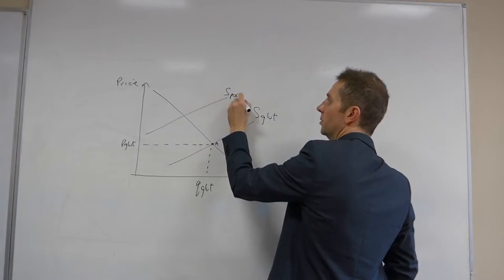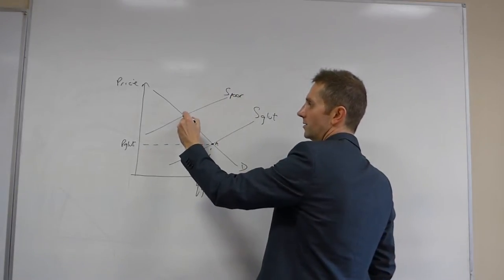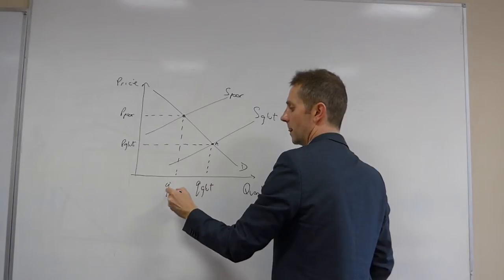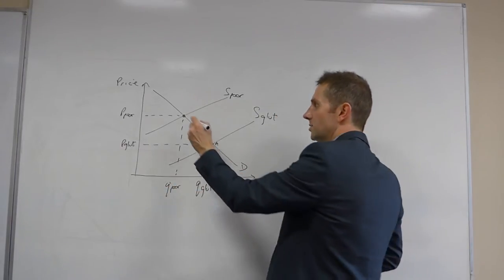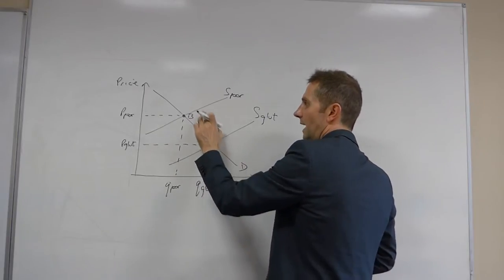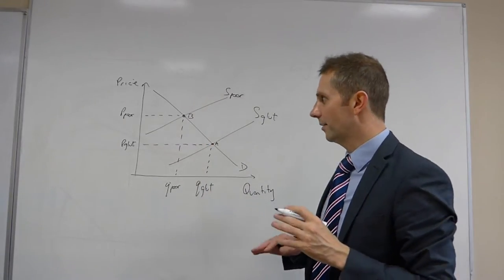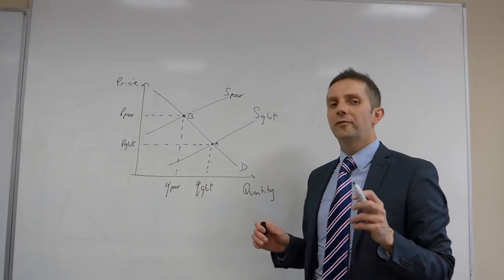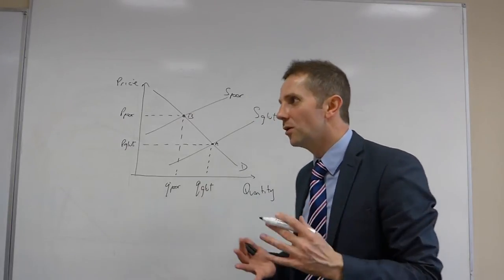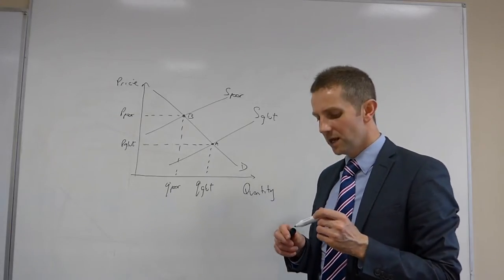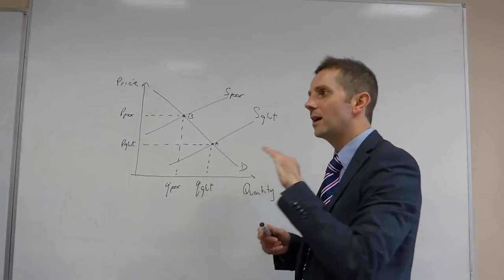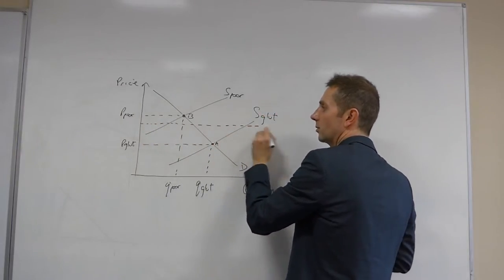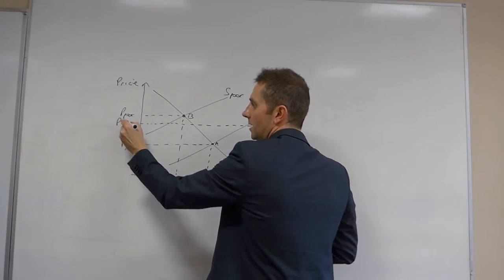And when we have a glut, this is the price under the glut conditions and this is the quantity under the glut conditions. We'll call this point A. We're also told that in bad times when the weather is poor and the harvest is poor, we can have a supply curve somewhere up here. This is supply poor. And as a consequence of that, our price is P poor and the quantity Q poor. So, for the sake of argument, say that this level is P star.